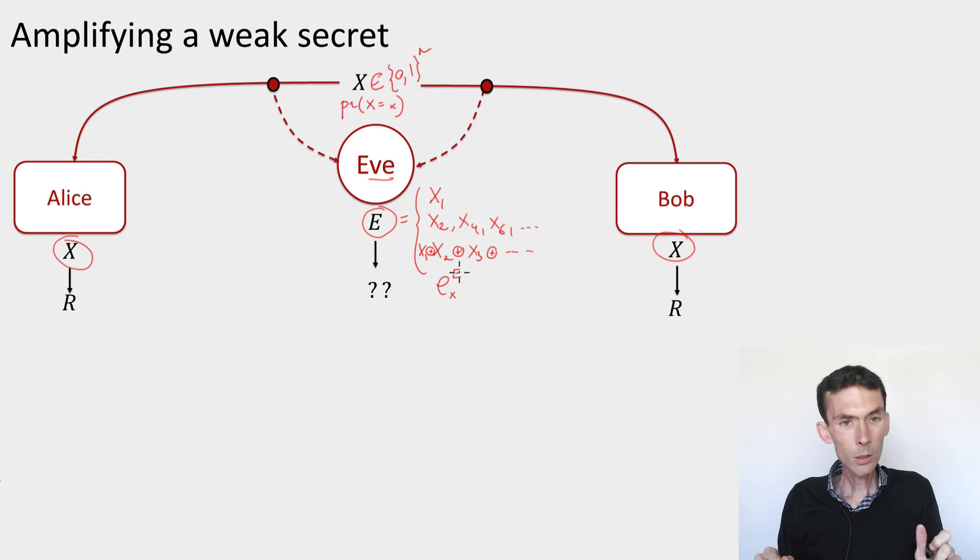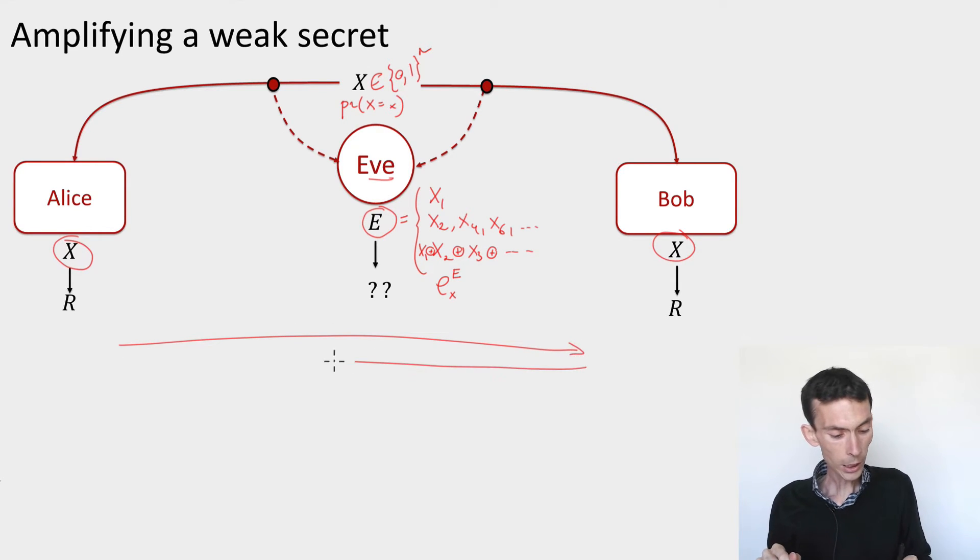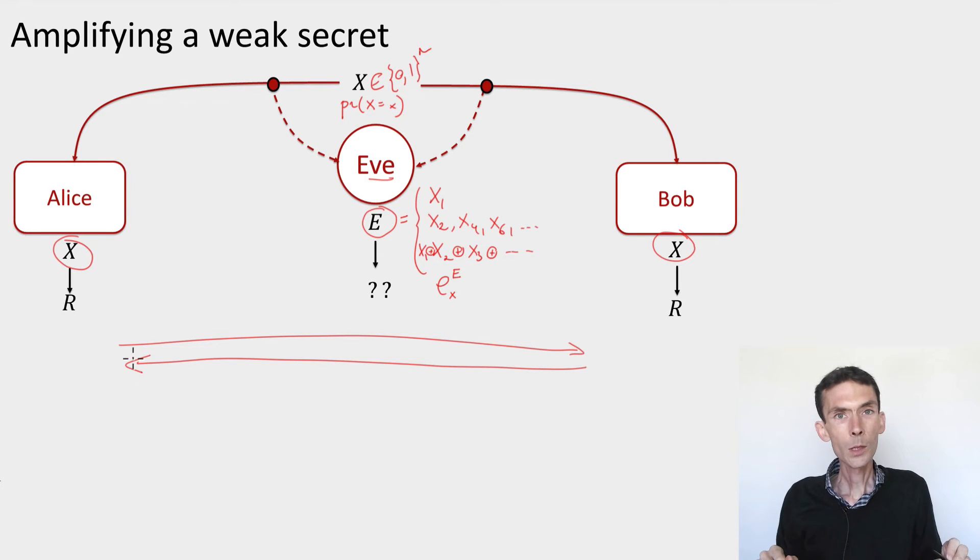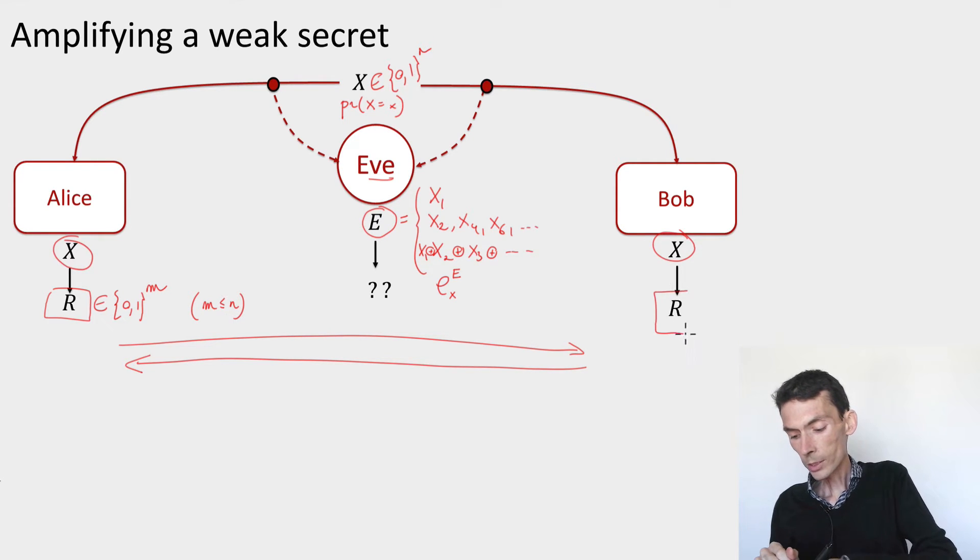The goal of privacy amplification is for Alice and Bob to perform a certain procedure. This procedure is allowed to use the public channel so it can involve communication between Alice and Bob. But at the end of the procedure, Alice produces a string r. This will be a string that has length m, and m will typically be smaller than n. So some of the string x has to be discarded. Alice should come up with r. Bob should come up with the same r.